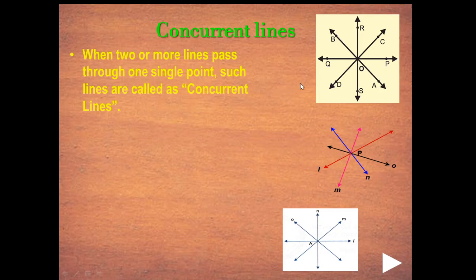In the first diagram, I can see line CD, line PQ, line AB, and line RS, all passing through point O. In the second diagram, lines pass through point P. In the last diagram, lines pass through point A. So all these lines — AB, PQ, CD, RS, and others — are called concurrent lines.